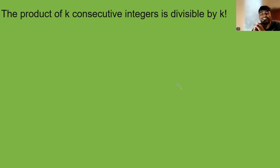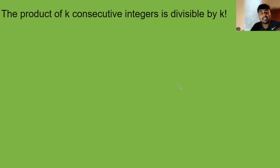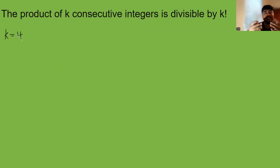I claim that the product of k consecutive integers is always divisible by k factorial. Let's dive into a proof. In fact, I'm just going to look at the case where k is 4, but it's very easy to generalise this method to all values of k.